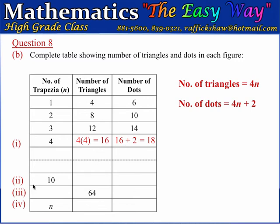For part 2, we want to know the number of triangles and dots that corresponds to N equals 10. The number of triangles will be 4 multiplied by 10 which is 40, and the number of dots will be 4N plus 2, which becomes 40 plus 2 which is 42.